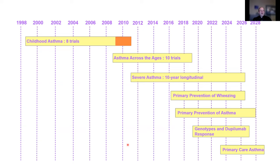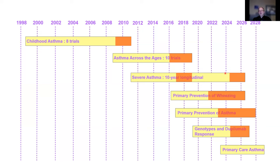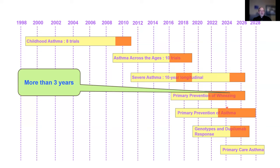The first project I worked on was childhood asthma — a seven-year grant that needed two years of no-cost extension. In fact, that's happened in every single project. The asthma-across-the-ages study went for a full three-year no-cost extension. The severe asthma study had a two-year no-cost extension in the middle, and another two-year is anticipated at the end. The primary prevention asthma study is problematic — we're already coming to the end of our third no-cost extension and the project's not done.